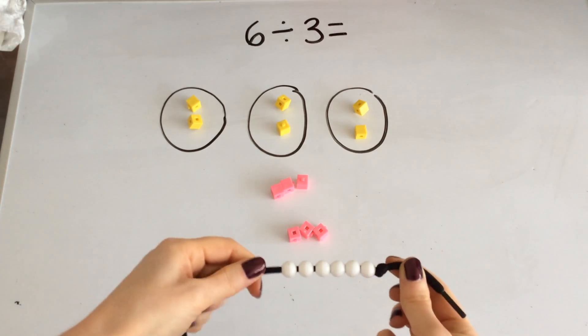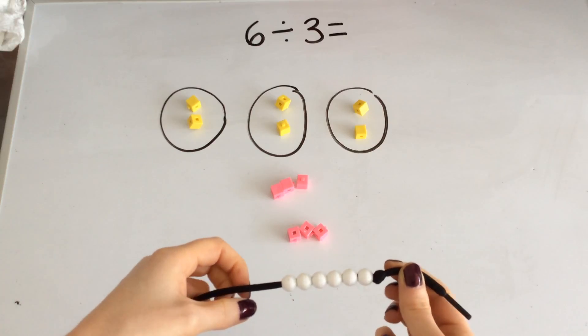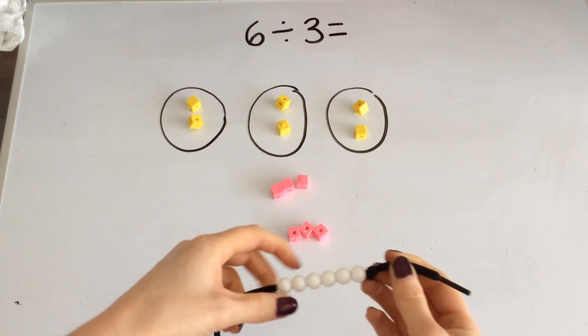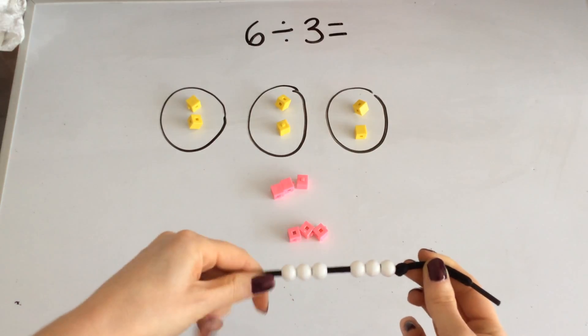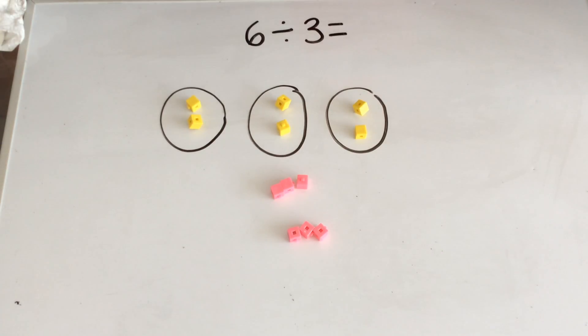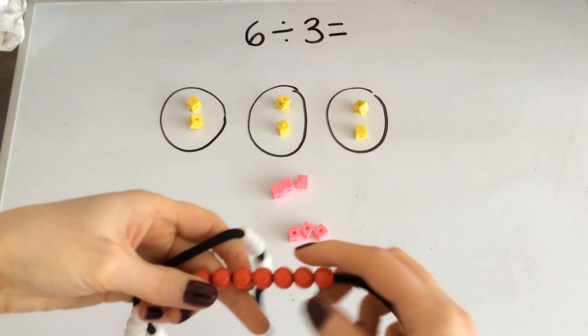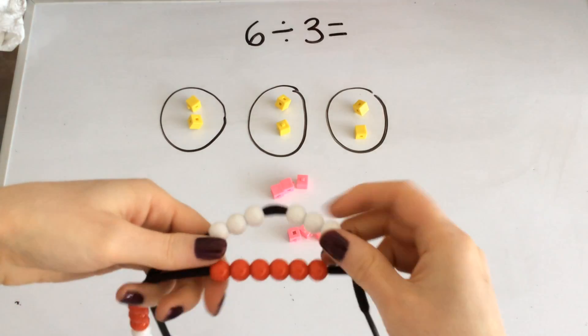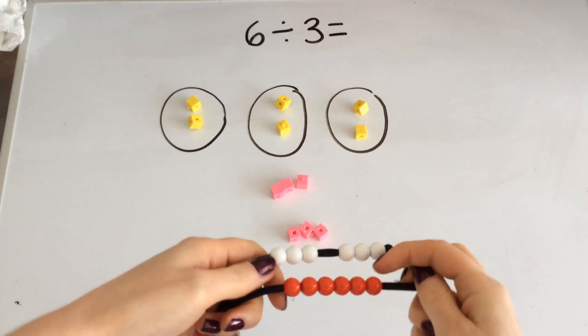If I have 6 ones and I wanted to group them into groups of 3, I could do so like that. And on my other end of my bead string, I'm going to show you another 6. This time my 6 is going to be grouped into groups of 2.